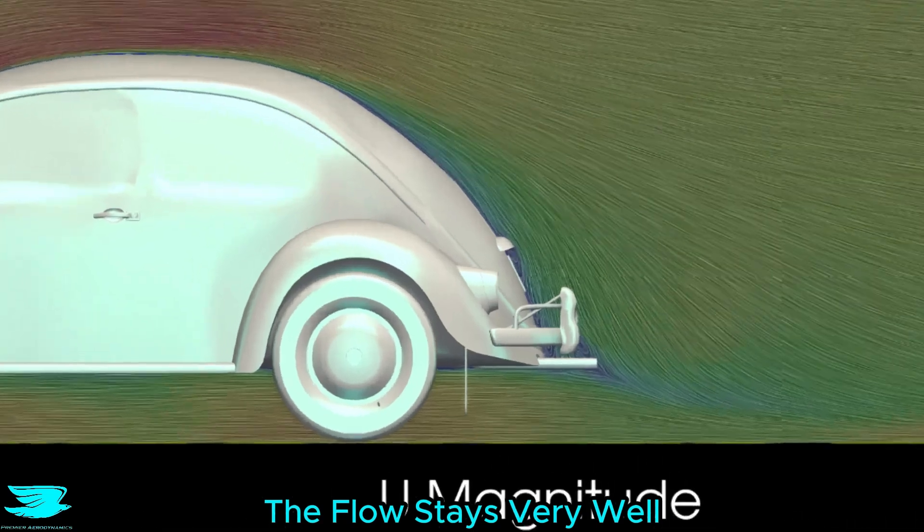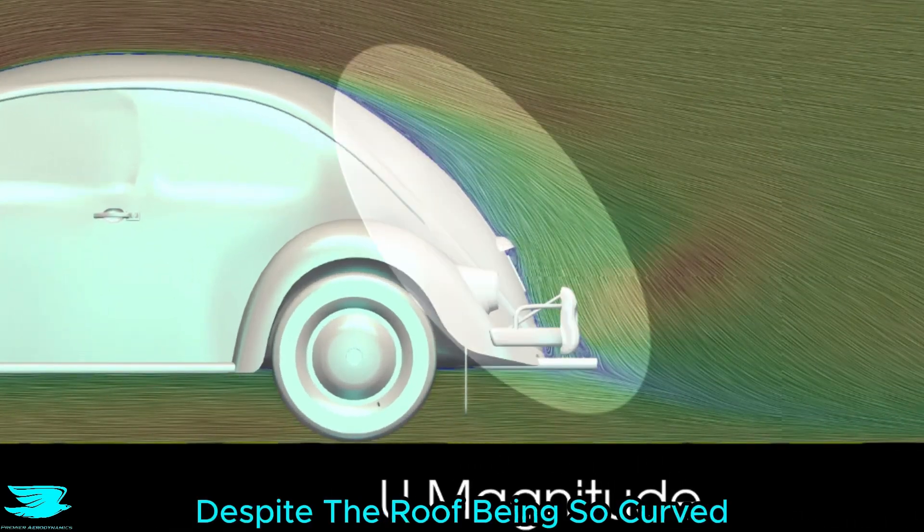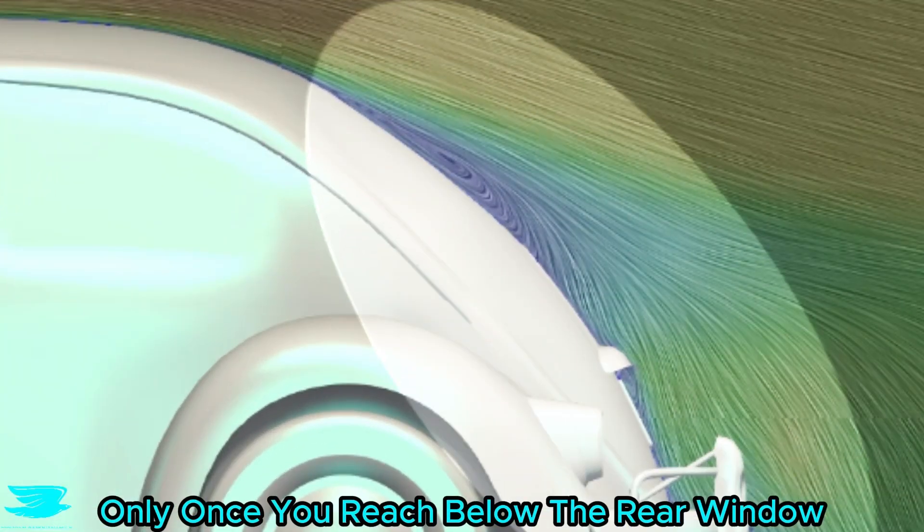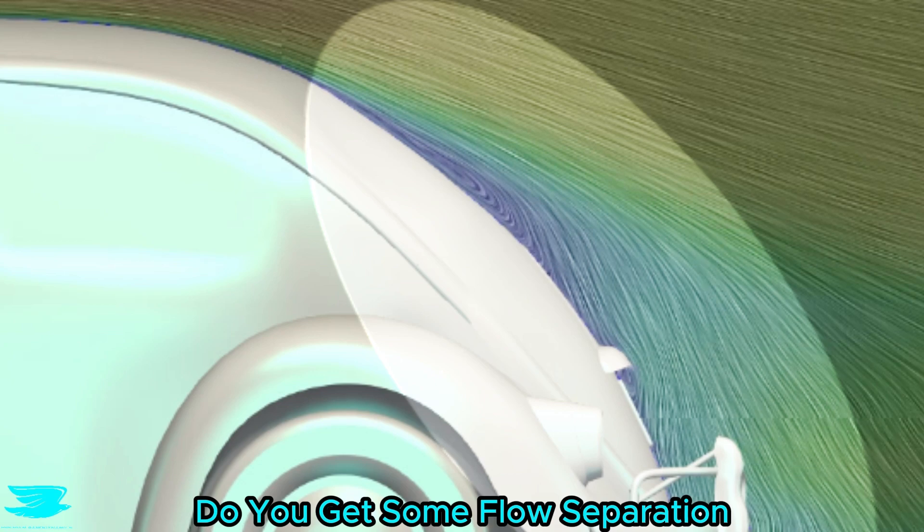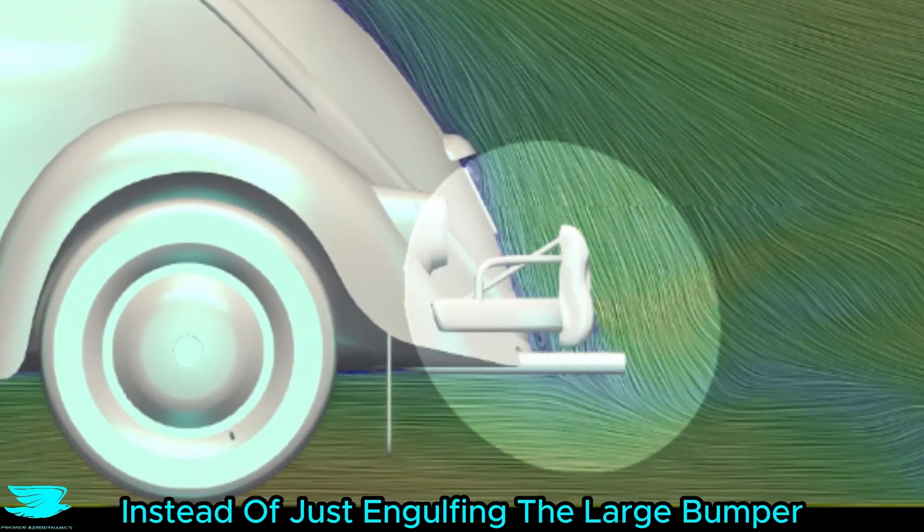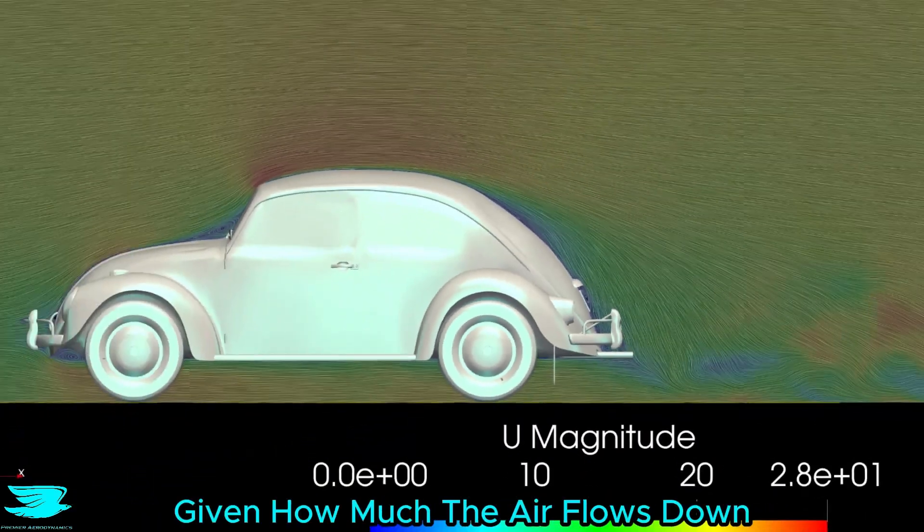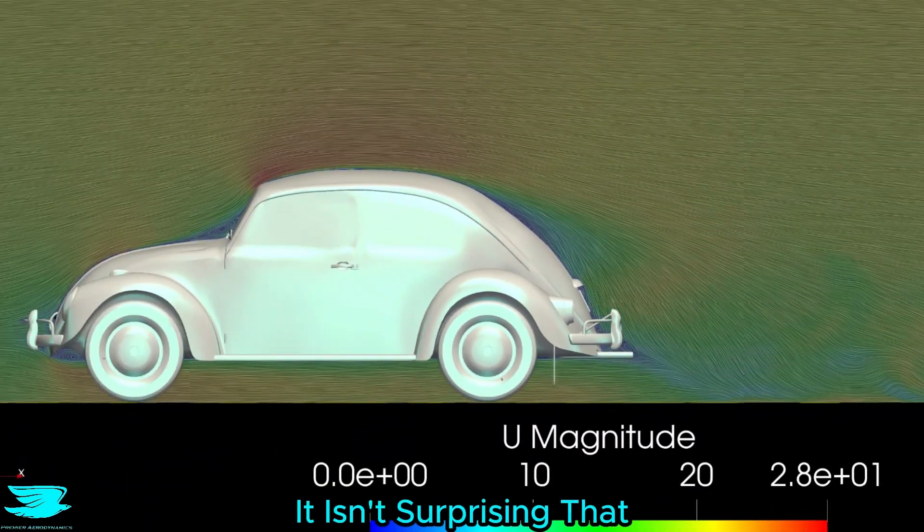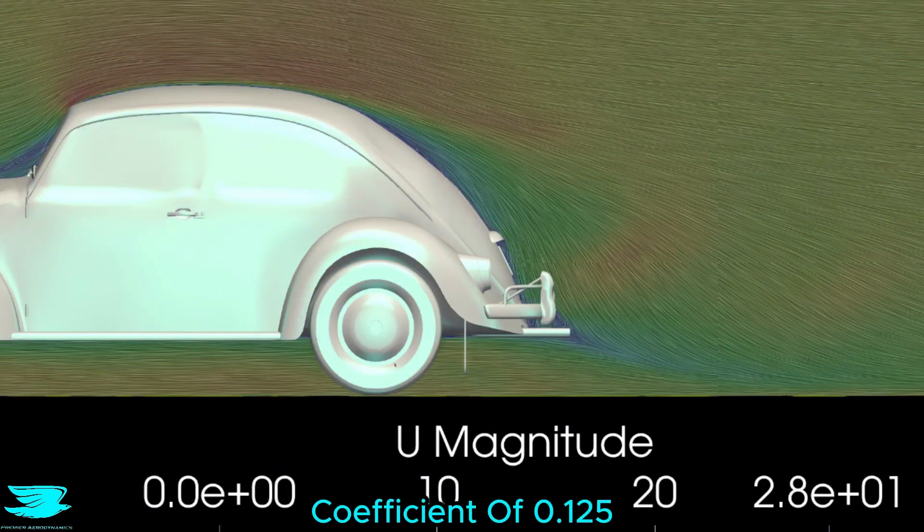From this plane, the flow stays very well attached over the roof despite the roof being so curved. Only once you reach below the rear window do you get some flow separation, but the flow then sucks back in and, surprisingly, flows in between the car and the rear bumper, instead of just engulfing the large bumper in a large wake. Given how much the air flows down, it isn't surprising that the Beetle has a lift coefficient of 0.125.